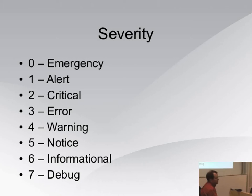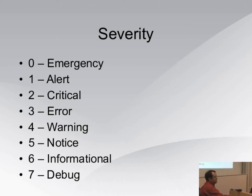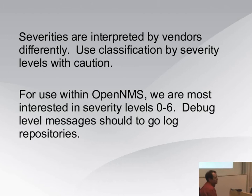Here are the standard severities. These are fairly well mirrored in OpenNMS. In a network management system, we're mostly concerned with levels 0 through 6. Debug is meant to be used with a repository for heavy-duty storage and investigation, like a Logstash/Elasticsearch kind of setup — it's meant to deal with volume. OpenNMS is not necessarily a volume-oriented system; it's not meant to be a performant repository for large numbers of events in its database.